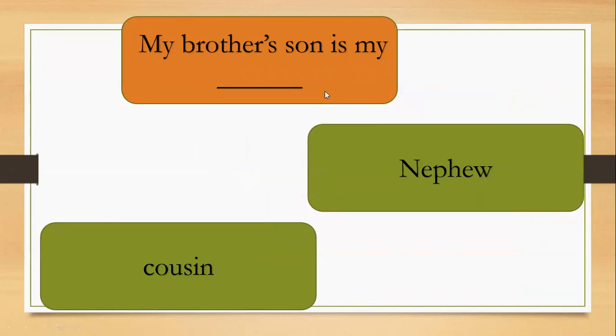Let's read the sentence. We should continue with the correct answer. My brother's son is my, I'm the brother. I have a brother. My brother and the son is my nephew or cousin? What do you think? Nephew. Excellent. Nephew. Good job.